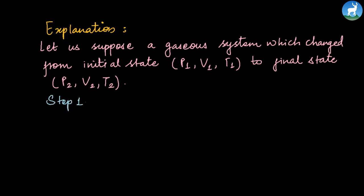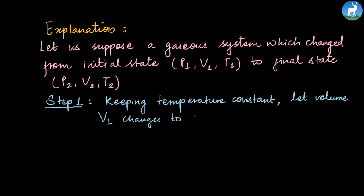Now the steps are: Step 1 - Keeping temperature constant, let volume V1 changes to V by changing pressure from P1 to P2. When pressure changes, volume changes. So volume V1 converts to V. Now we apply Boyle's law.